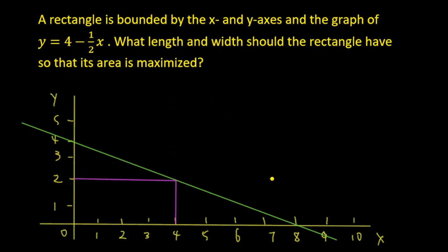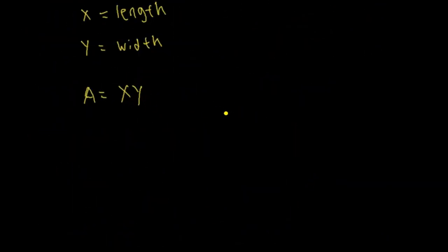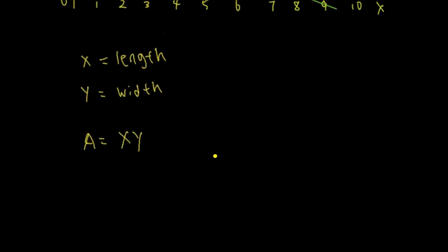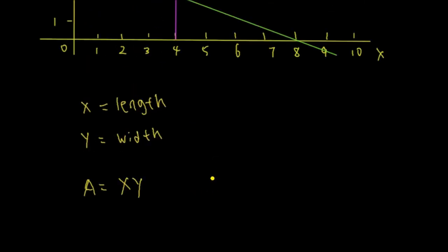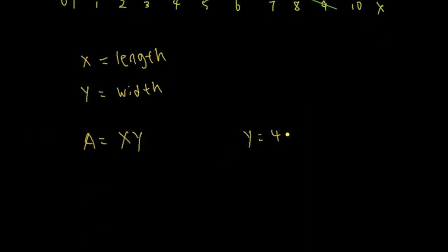This is an optimization problem, so we have to take the derivative and find the maximum value. However, we have two variables here — x and y — and taking the derivative is not that easy. What we should do is find one variable in terms of another so we can substitute, leaving only one variable. We know from the question that y equals 4 minus one-half x, so we have y in terms of x. We can substitute this into the area formula: area equals x times y, and y is 4 minus one-half x.